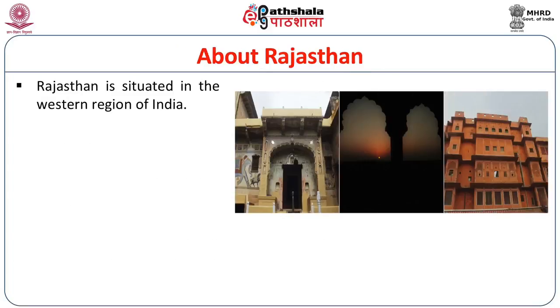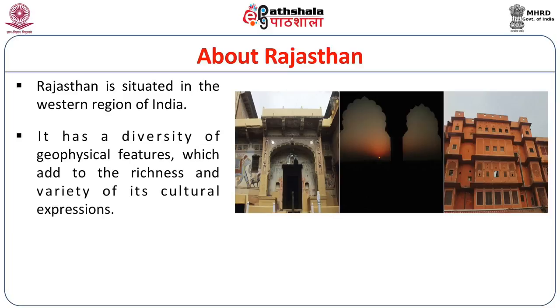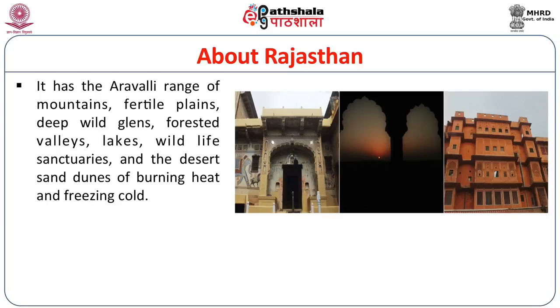Rajasthan is situated in the western part of India. It is the largest state in terms of area, and its geography is very distinctive from the rest of India. The Aravalli mountain range, the oldest mountain series in the subcontinent, known for its very hard rock and stable landscape, passes through the state and divides it into two parts. On the eastern side you have the evergreen Mewar and eastern Rajasthan; on the western side you have the Thar Desert and the Marwar region. On both sides of the Aravalli, you have distinctive architectural styles that have evolved from the time of the Indus Valley civilizations and expressed in a variety of forms not found in any other state of India.